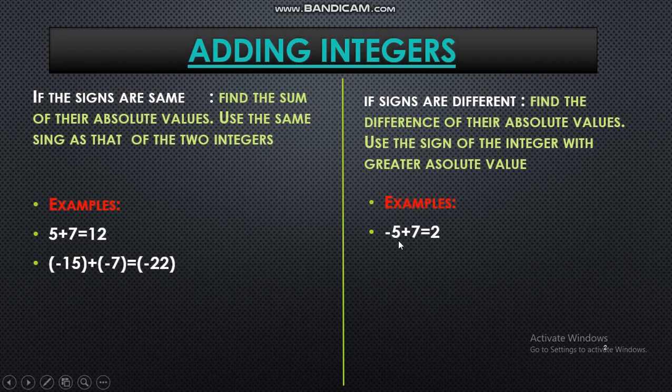I have two integers that is negative 5 plus positive 7. Both are of different sign. So I am doing the subtraction first. 7 minus 5 is how much? 2. Clear? Then next decide who is bigger, 7 or 5. 7 is bigger which is positive. So answer is also positive.